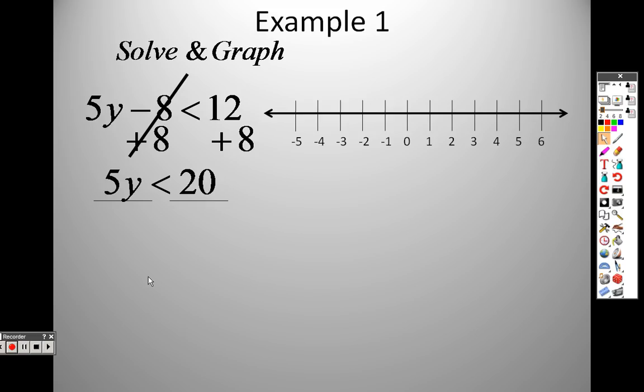I divide both sides by 5 because it's 5 times y. So the opposite of multiplication is division. So I divide them, ending up with y is less than 4.